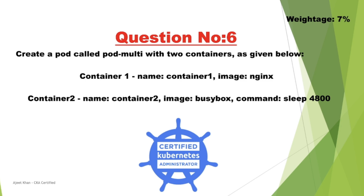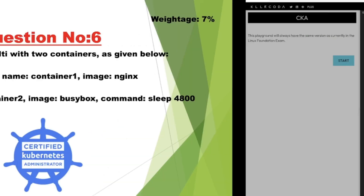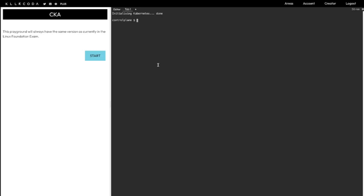Container 1 has name 'container1' and image nginx; container 2 has name 'container2' and image busybox, and it should have a command sleep for 4800. So let's solve this one. Here we are on our playground — I'm going to use Killercoda playground for CKA. We need to create a pod and it should have two containers.